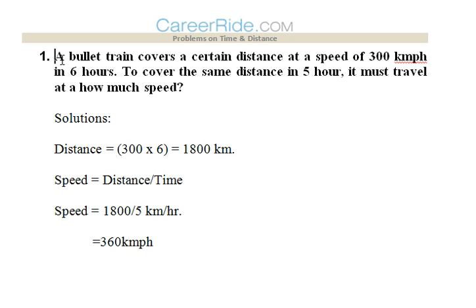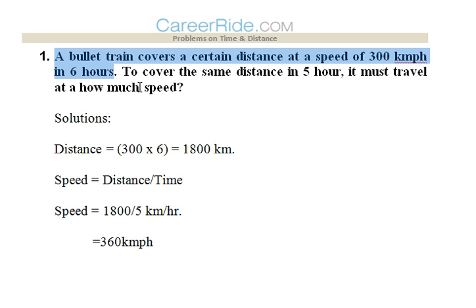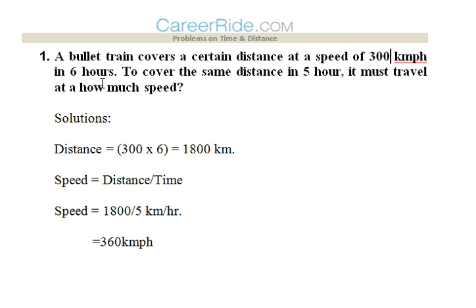The first question: a bullet train covers a certain distance at the speed of 300 km per hour in six hours. We can simply calculate the distance here since the speed and the time are given. So 300 multiplied by 6 is equal to 1800 km.